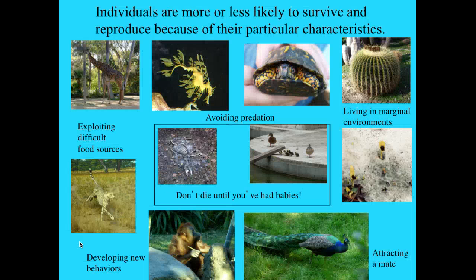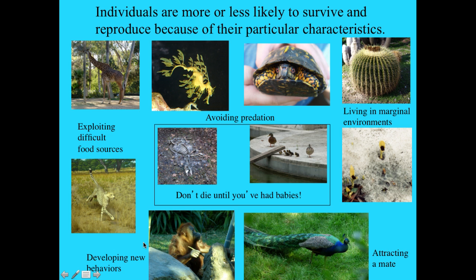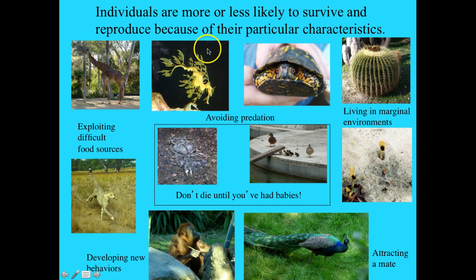Some individuals are either more or less likely to survive, and especially to reproduce, because of the particular characteristics that they have. They have to be able to develop new behaviors. If the orangutan can't access termites using a tool, he or she is not going to survive and is not going to find any mates. The same thing applies to attractiveness, ability to survive in a difficult environment, the ability to avoid predation — whether through armor or through camouflage — and the ability to exploit difficult resources.